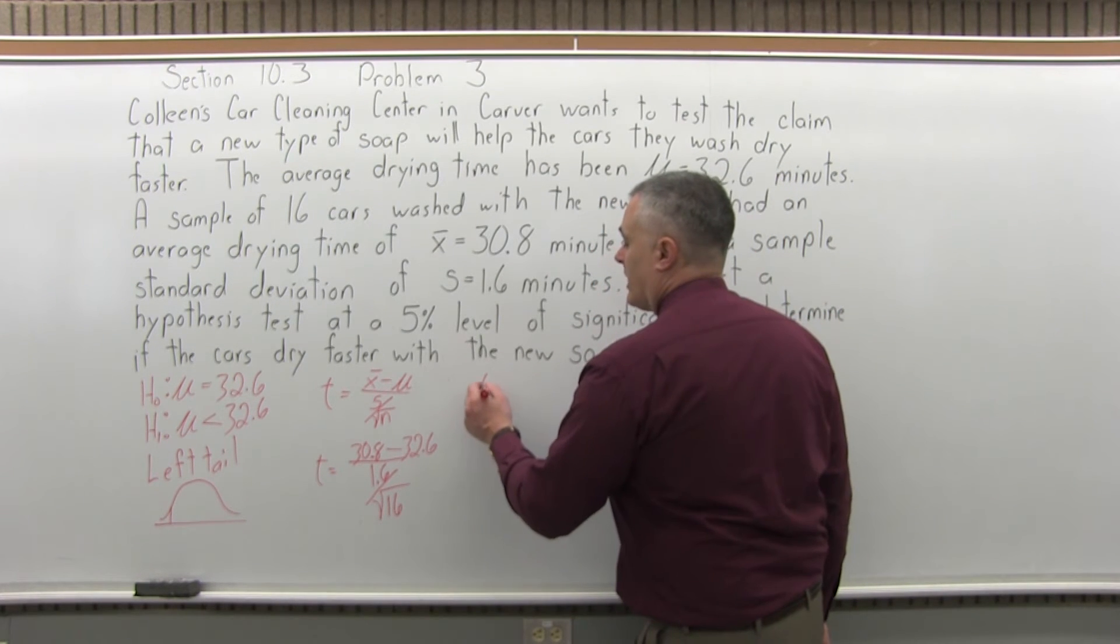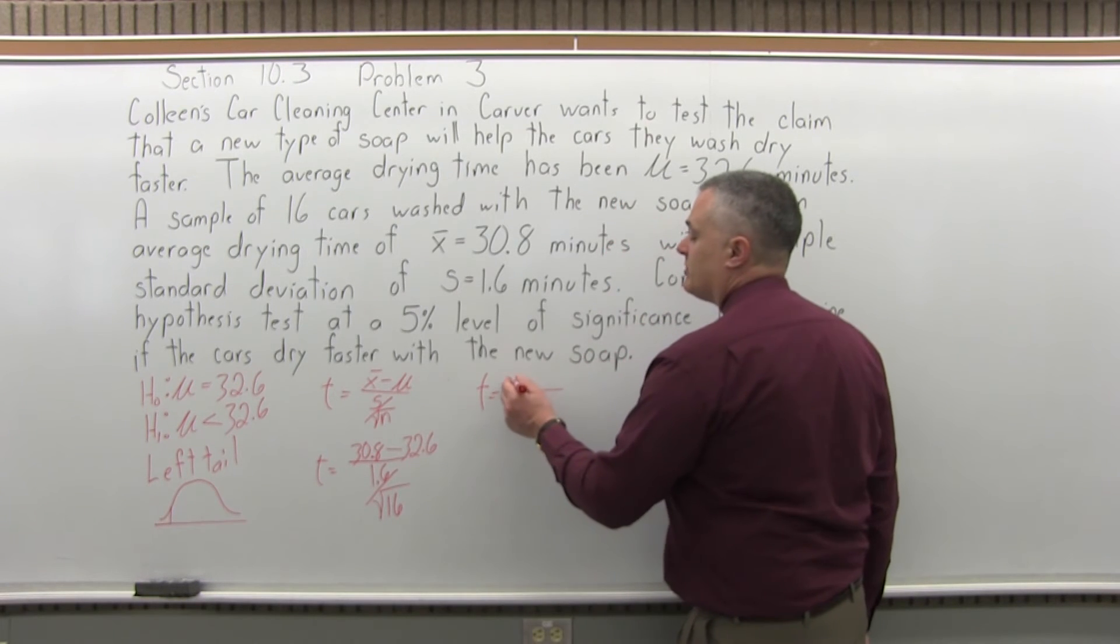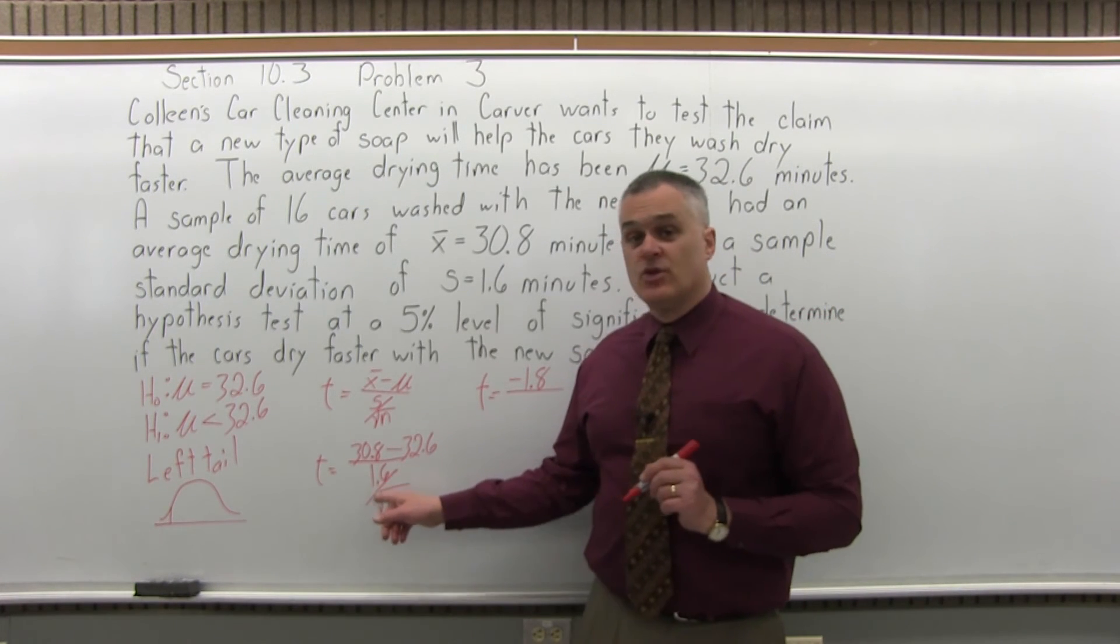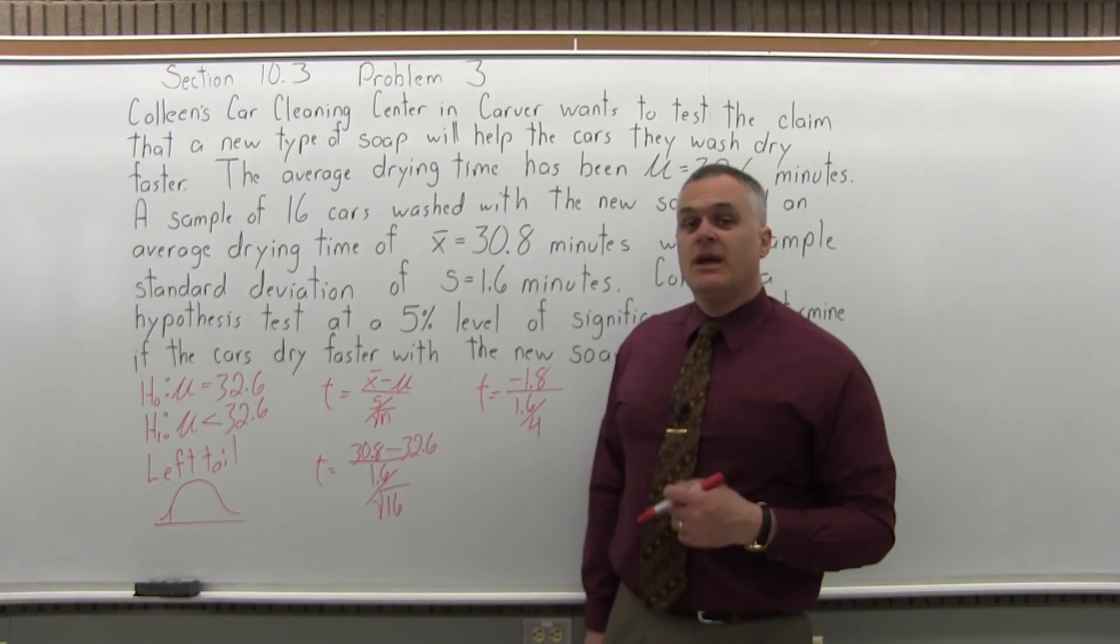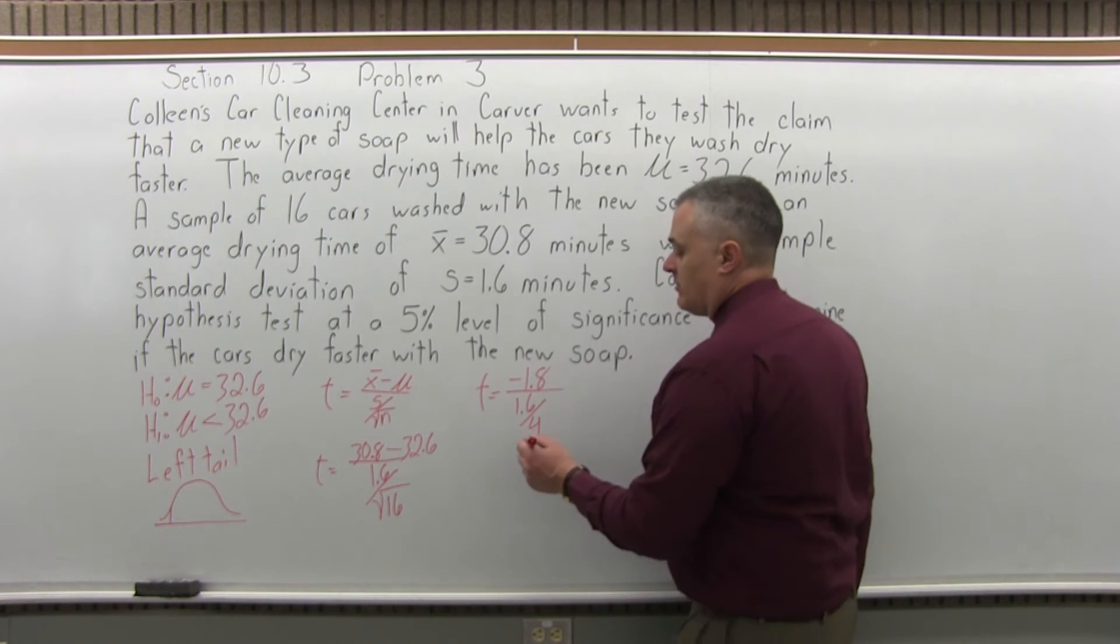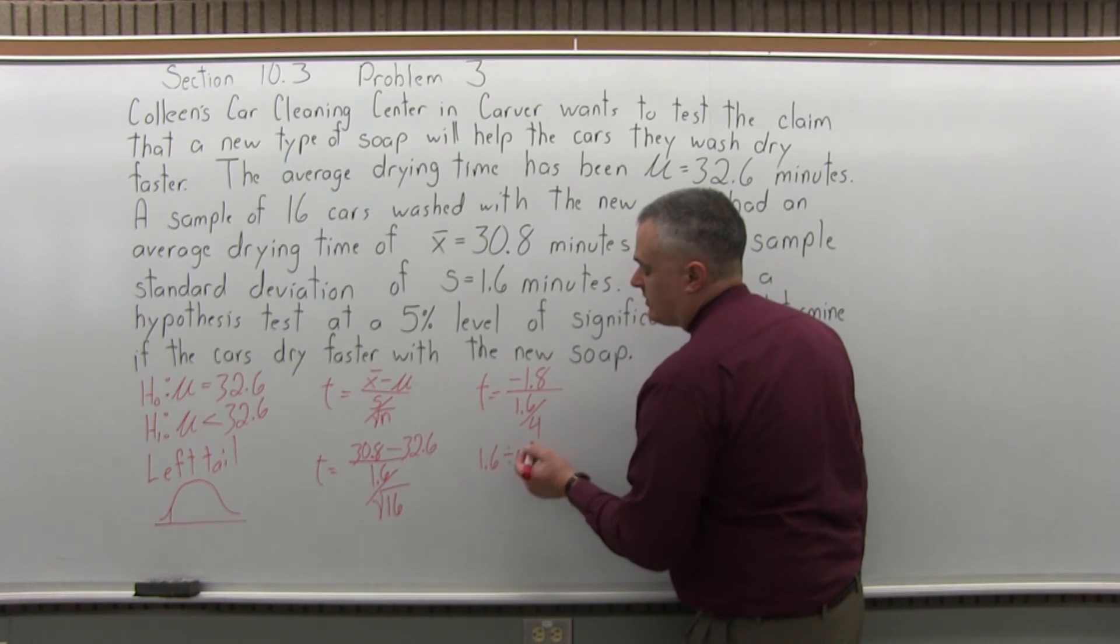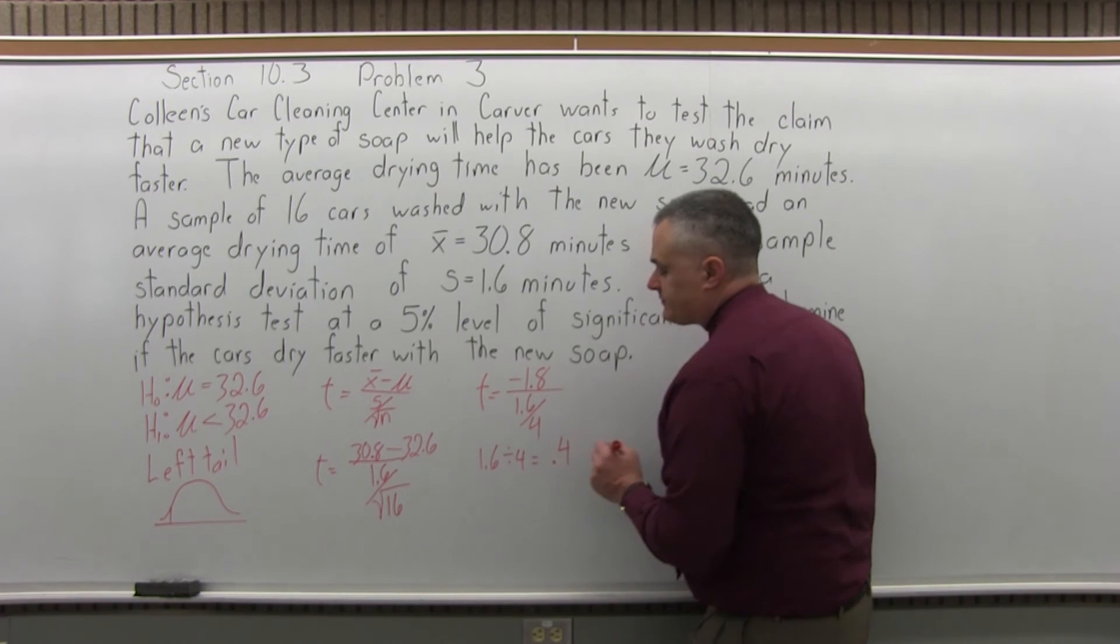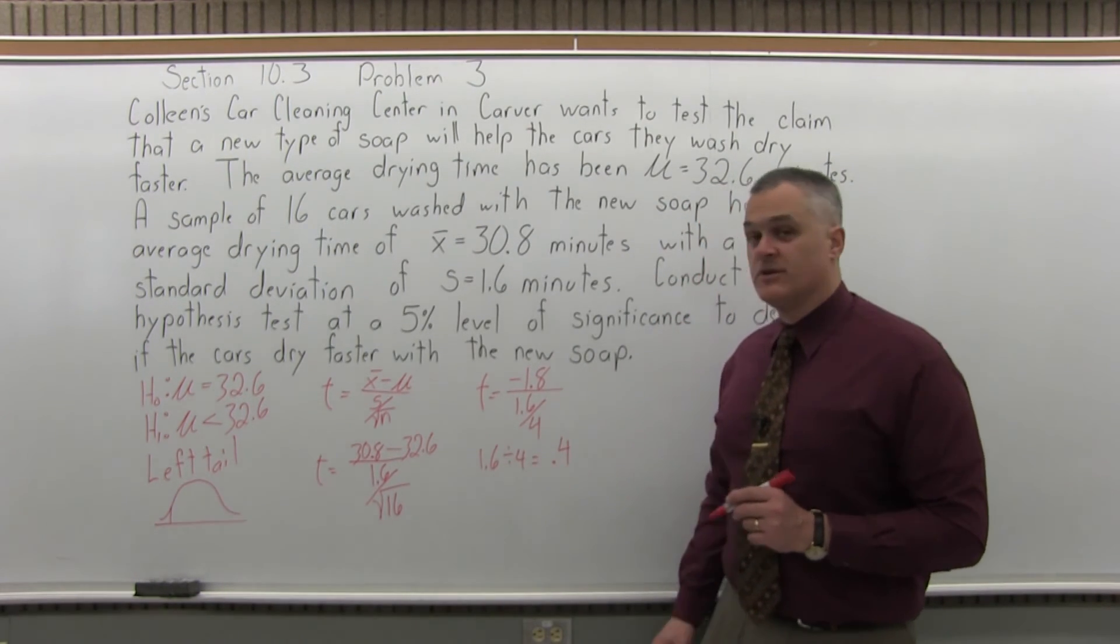And now I've filled in the formula and now I can start the computation. So, in the numerator, 30.8 minus 32.6 will be negative 1.8. And then in the denominator, I'll have 1.6 over 4. That square root of 16 is 4. And then I can simplify the denominator a little bit further. 1.6 divided by 4 equals, I can actually do without the calculator, 0.4. If you don't see it or you're not really certain, just do it with the calculator. You'll see it's 0.4.